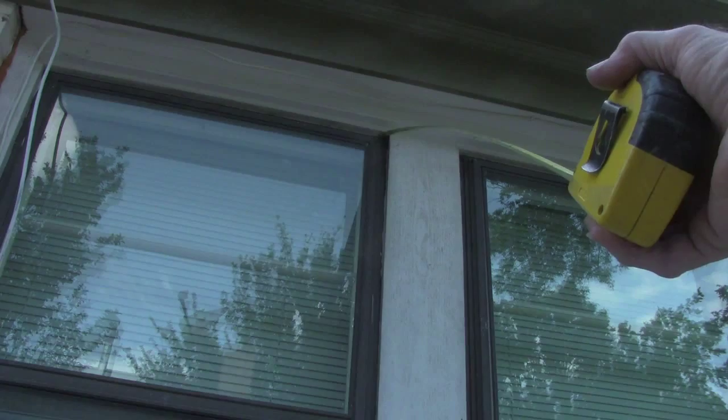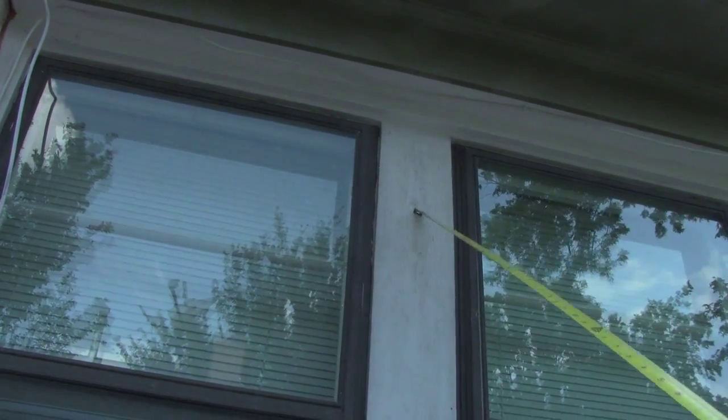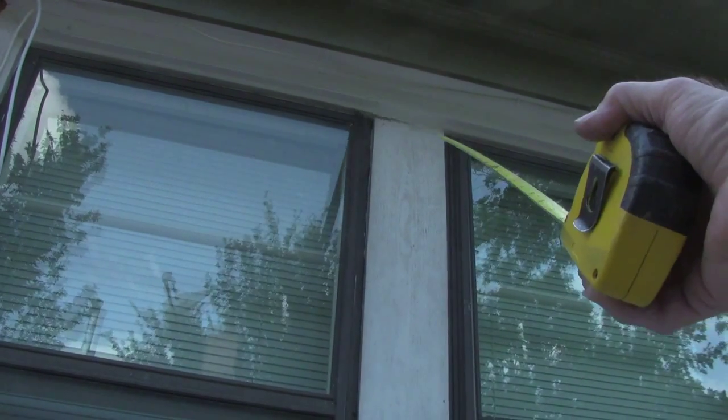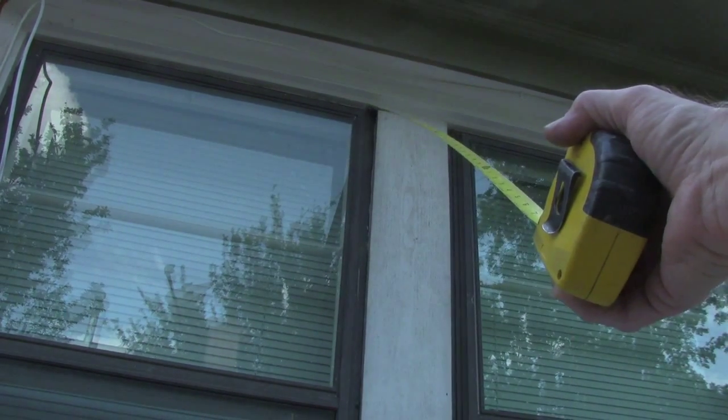Now you can measure to the trim or you can measure to the brick mold, but being that this is a double window, your brick mold passes along the top, so you'll have to measure from the blind stop right there.